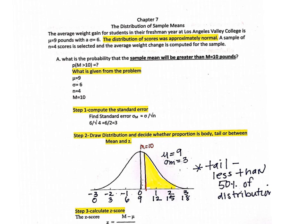What we're looking at is a mean and how far away that mean is from the population mean. That is different from what we've been looking at in Chapters 5 and 6, because we were looking at a raw score and how far away that raw score was from the population mean.